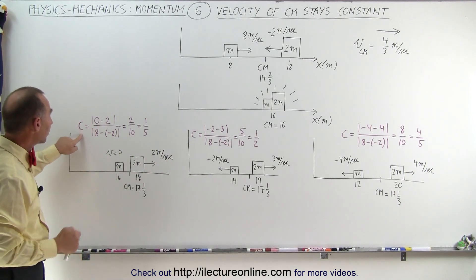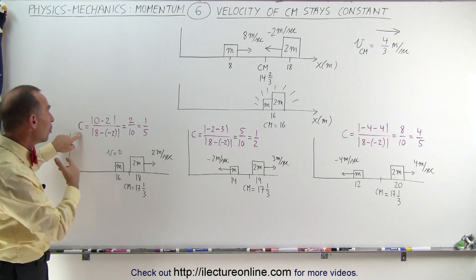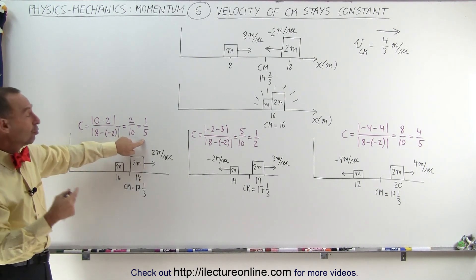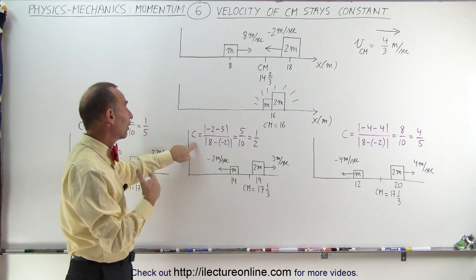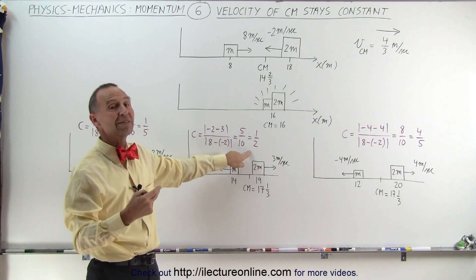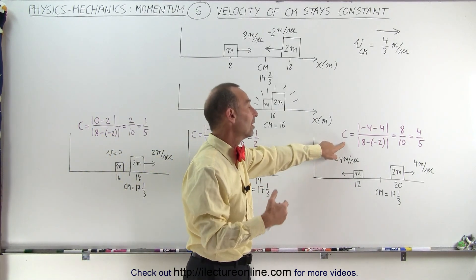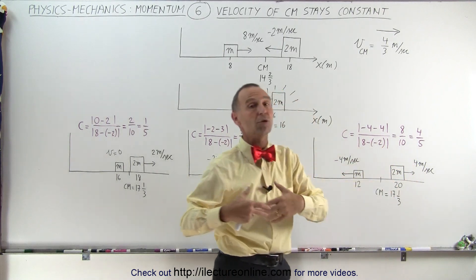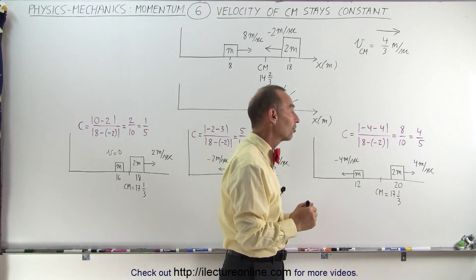Notice when we calculate the coefficient of restitution, in this case, most of the energy is lost, and the coefficient of restitution is a small quantity, one-fifth. Here, the coefficient of restitution is larger, which means that not as much energy is lost, and here the coefficient of restitution is four-fifths, which means almost all the energy was retained. Very little of the energy was lost.